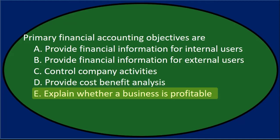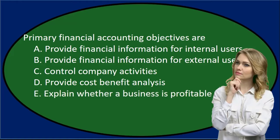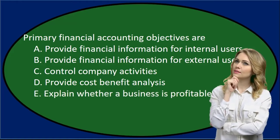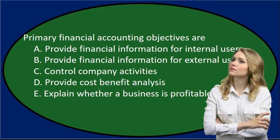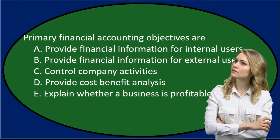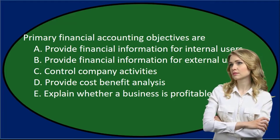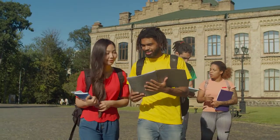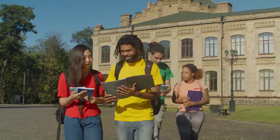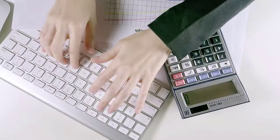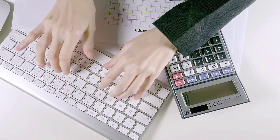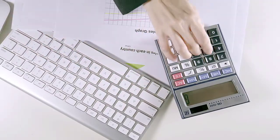Note that this is the type of question where we may consider there being more than one correct answer — we're looking for the most correct answer. In this case, the most correct answer will be B: for external users. This is a common question: who are the financial statements for? Primarily, they're for external users.